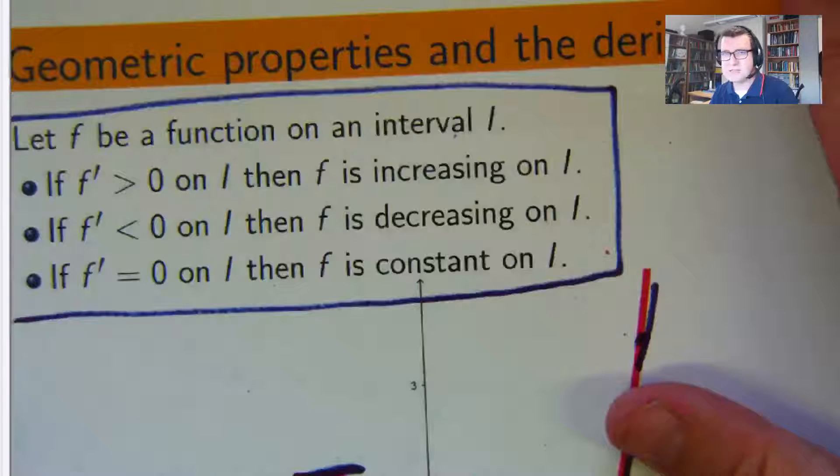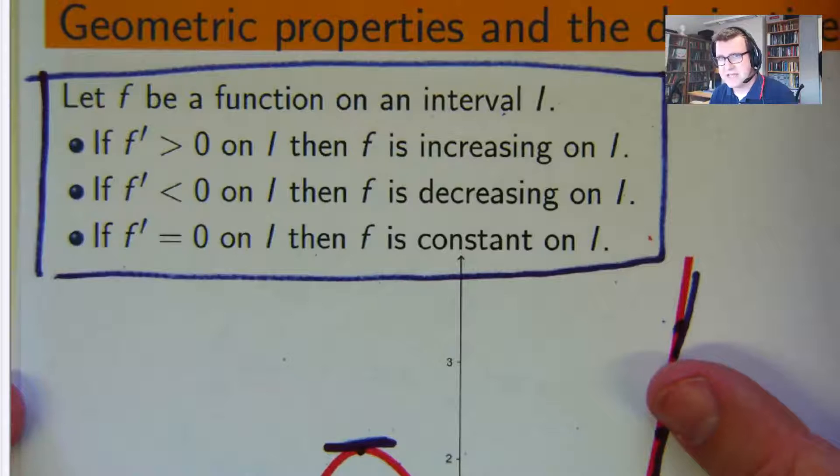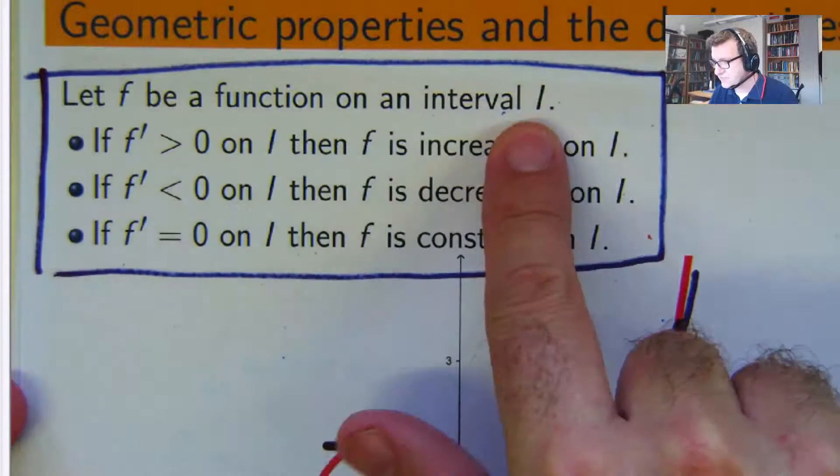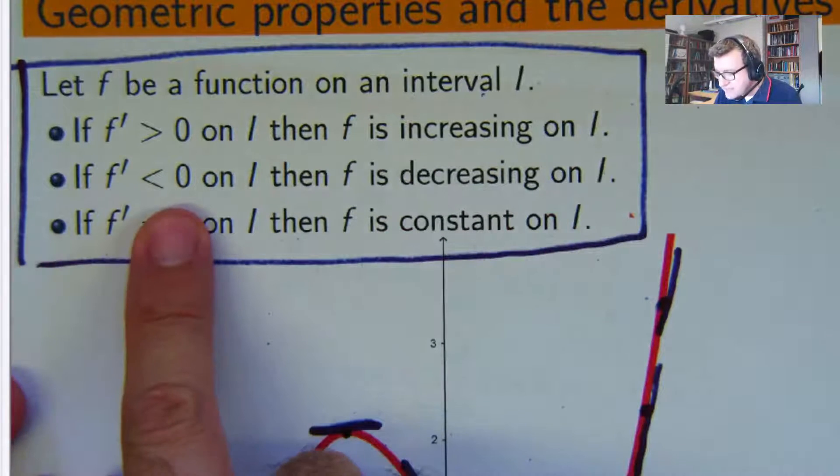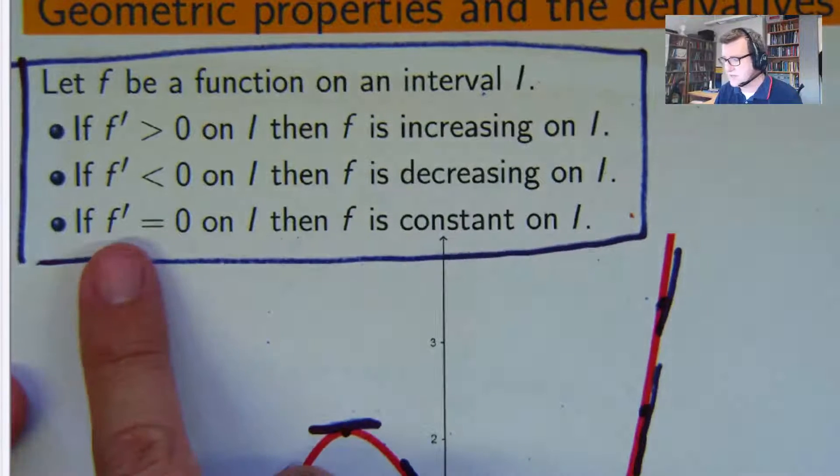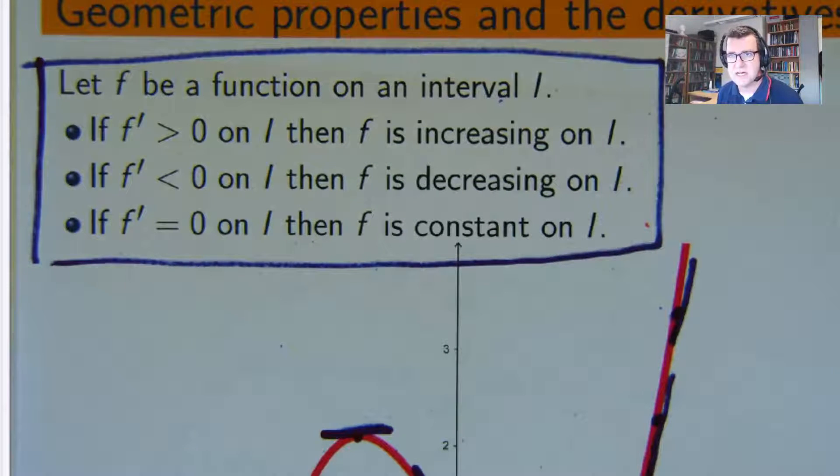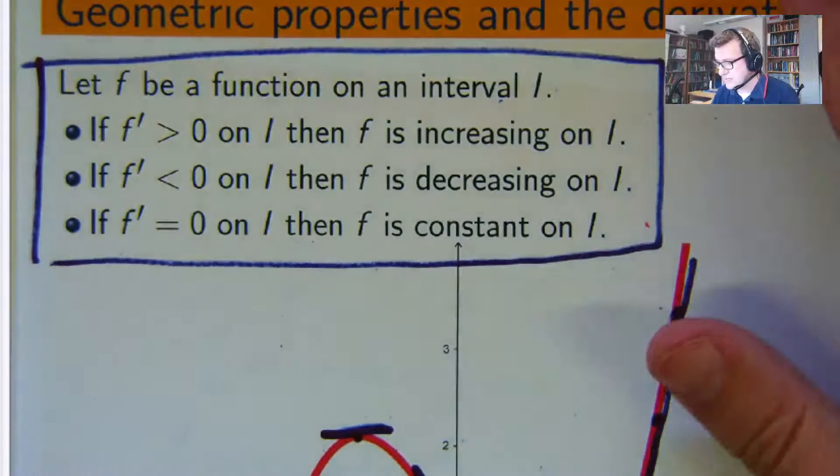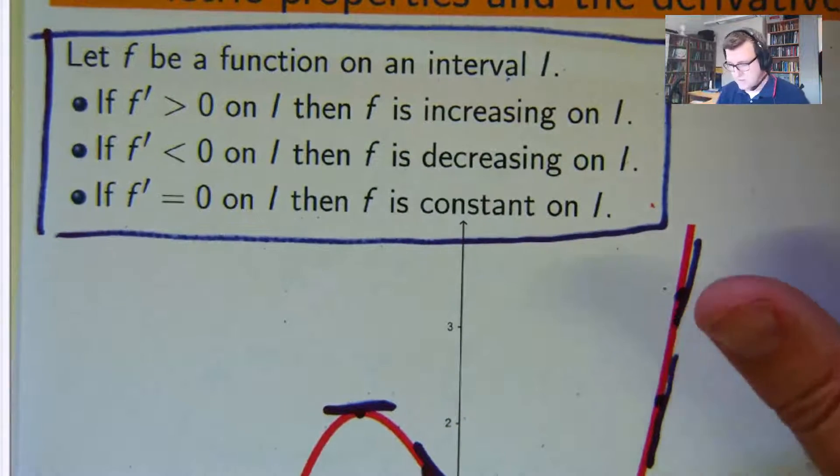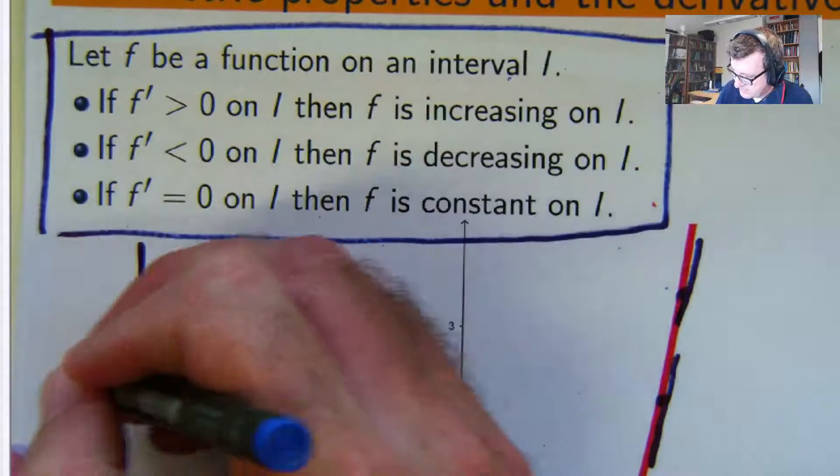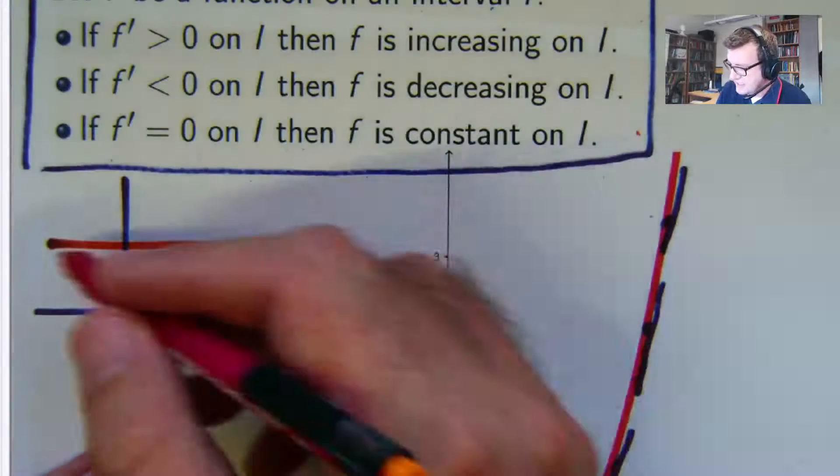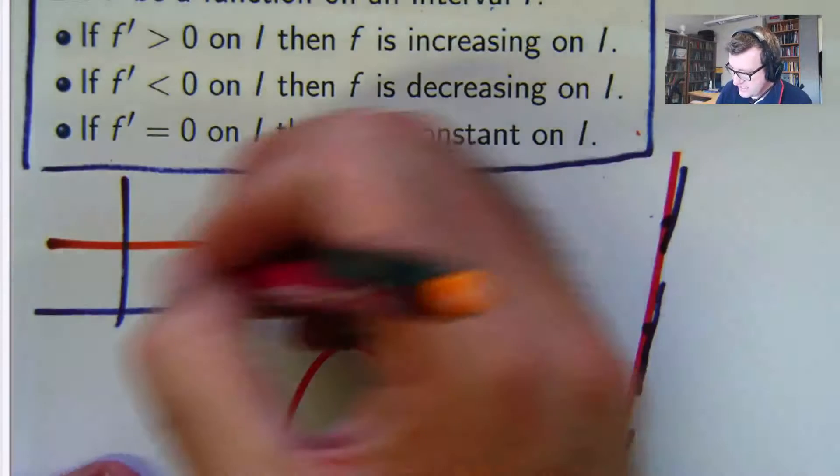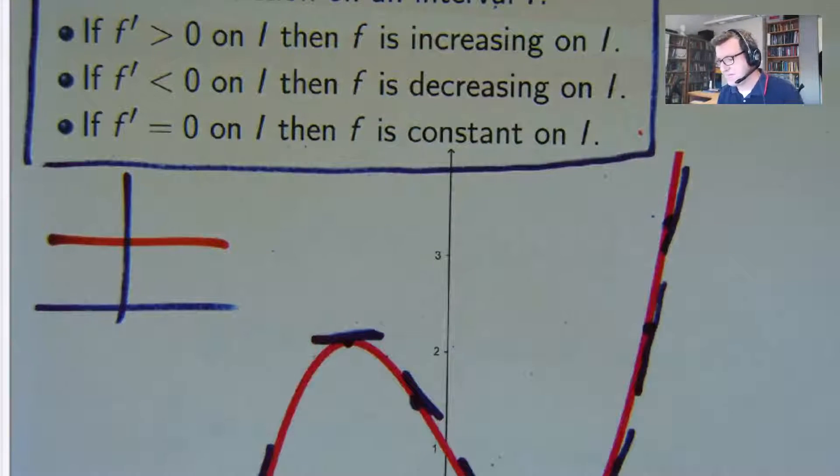Alright, so let me just recap that. If the function f is defined on the interval i and the derivative's positive, then f's increasing. If the derivative's negative, then f is decreasing. And if the derivative's 0, then f is neither increasing nor decreasing, it's constant. So for example, let me just draw a little picture for that one there. Let's say this is my function here. You can see the function's definitely constant and all the tangent lines to it have slope 0.